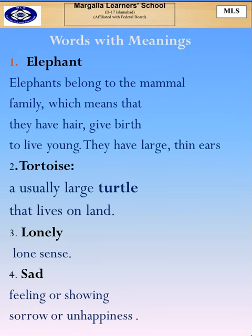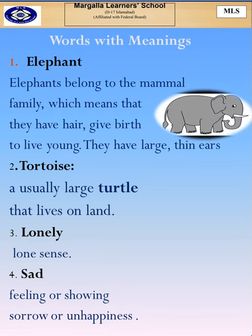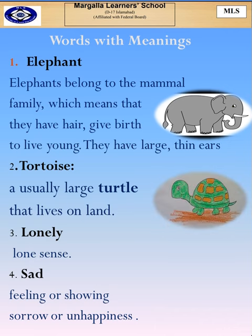Elephant — you have seen elephants, right? Elephants belong to the mammal family, which means that they have hair, give birth to their young ones, and they have large thin ears. Tortoise — you have seen a tortoise, maybe a usually large turtle that lives on land.